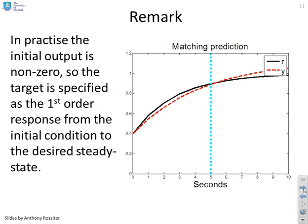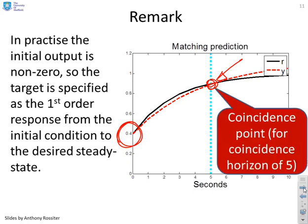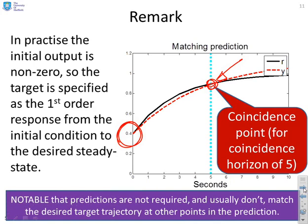Now in practice, the initial output might be non-zero. Here you can see I'm starting from an initial value of 0.4 and therefore we have to sketch our target or first order response as starting at 0.4 and going to the desired steady state. And nevertheless, we can still do this coincidence calculation. Here I'm using 5 seconds ahead. There's a key point, however, in this slide that you need to notice. Forcing coincidence here 5 seconds ahead does not mean you force coincidence at other parts of the prediction. So other parts of the prediction, there will be a difference between your ideal target and what the predicted output is doing. And that is one of the weaknesses of PFC, but in many cases that weakness does not matter.